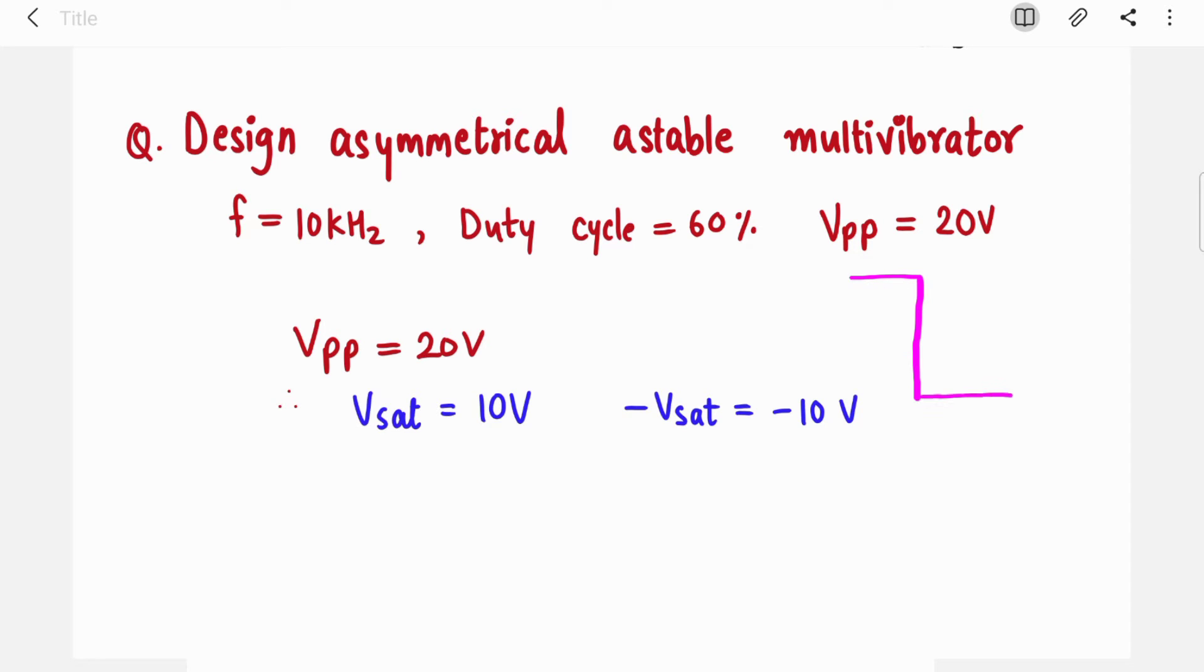Here V peak-to-peak is given 20 volt, so your output is oscillating between plus 10 volt and minus 10 volt. This plus V_sat is nothing but 10 volt. Generally your VCC is 1.5 times greater than your V_sat. To be on safer side, we will take 2 volts more than V_sat, so VCC equal to 12 volt and VEE equal to minus 12 volt.